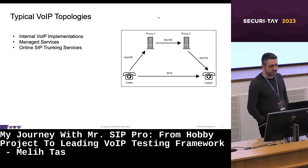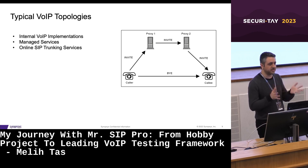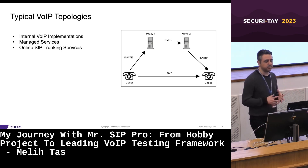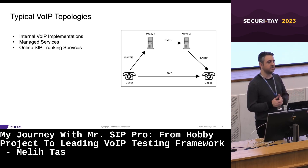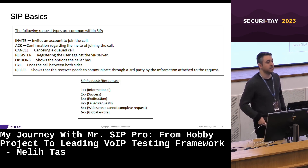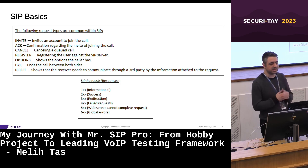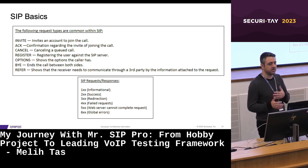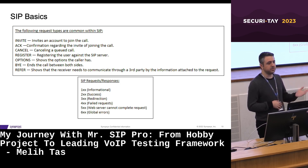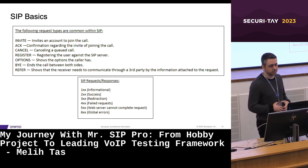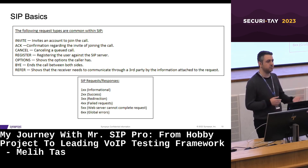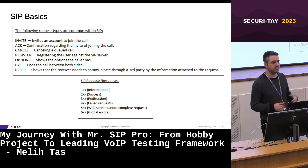Before going into more technical details, let's understand how SIP works. There are three common approaches to deploying Voice over IP within organizations: internal Voice over IP implementation, managed services, and online SIP trunking. SIP, or Session Initiation Protocol, is a text-based protocol for establishing and managing communication sessions between two or more devices over IP networks. SIP uses request methods and response types very similar to HTTP. Common request types include INVITE, ACK, BYE, and CANCEL, and response types include 1xx, 2xx, and 3xx codes — very similar to HTTP.